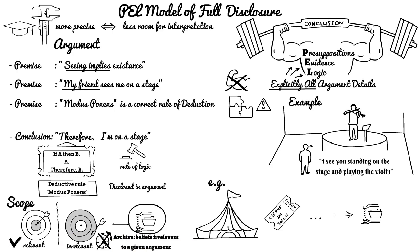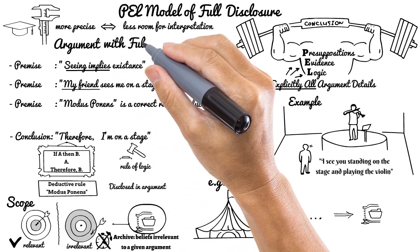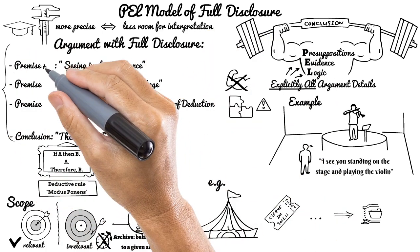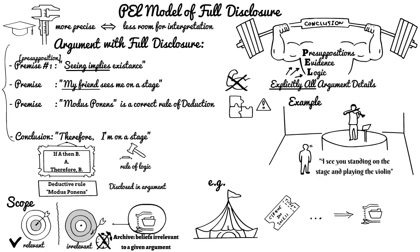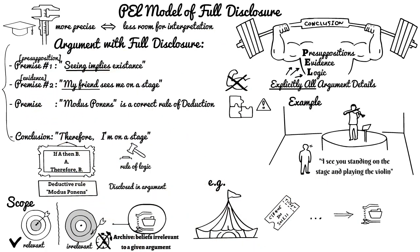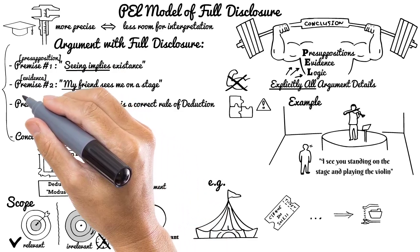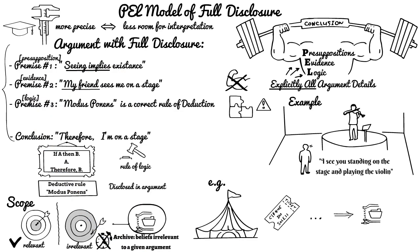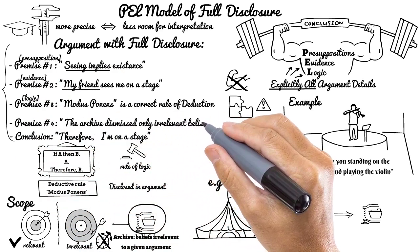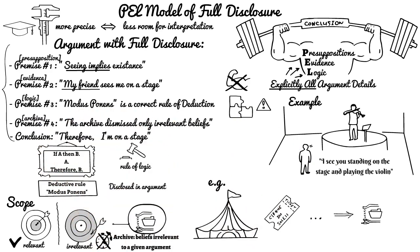Let's wrap up and represent the argument with full disclosure now, a little bit reshuffled. Premise number one, presupposition: Seeing implies existence. Premise number two, evidence: My friend sees me on a stage. Premise number three, logic: Modus ponens is a correct rule for deduction. Premise number four, archive: The archive dismissed only irrelevant beliefs. Conclusion: I'm on a stage.